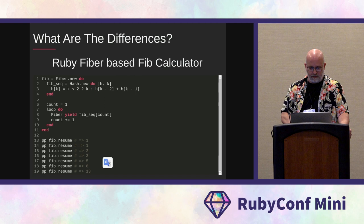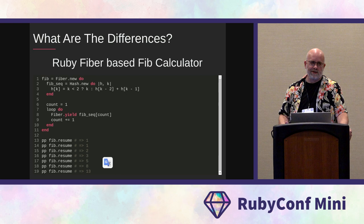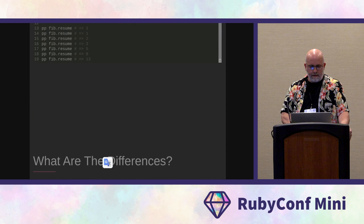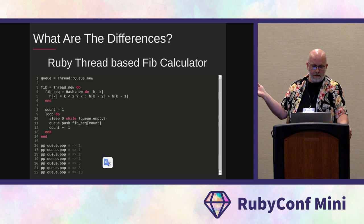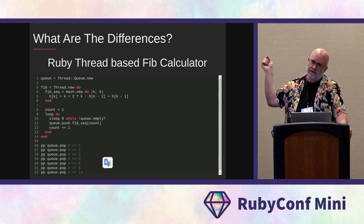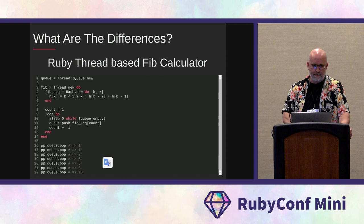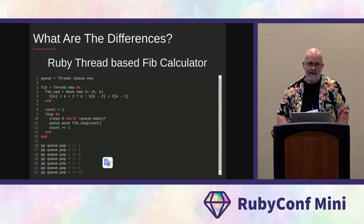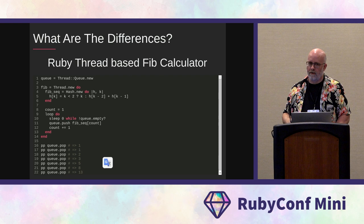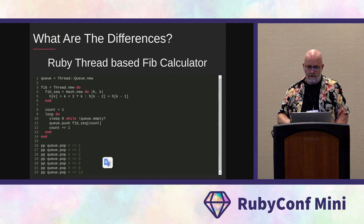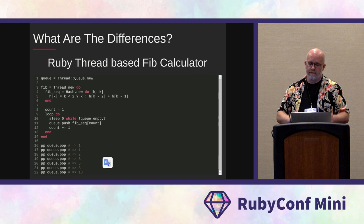Nobody's really using ractors yet anyway because there are still some growing pains there. This is the same thing written in Ruby with threads — it's similar, but with threads we're feeding the value into a queue and popping values off that queue. If you're using JRuby, you'd be using multiple CPUs. In regular MRI Ruby it's still going to be one CPU because of the global lock on those to prevent conflicts between shared data.